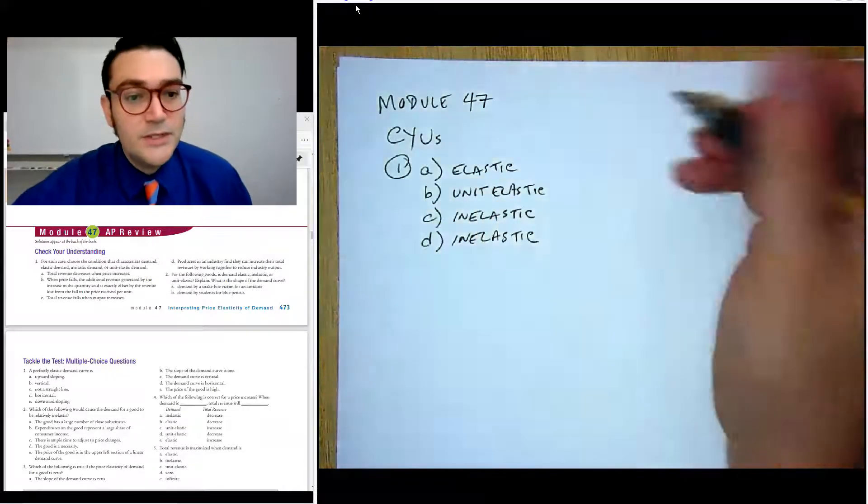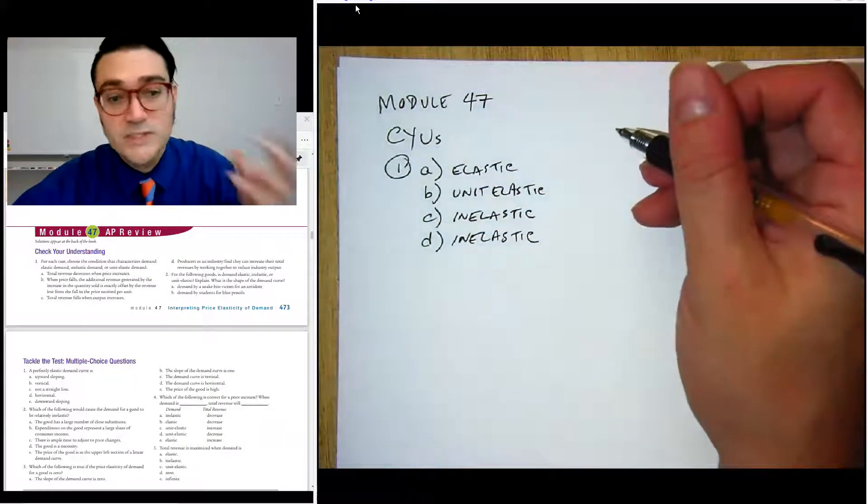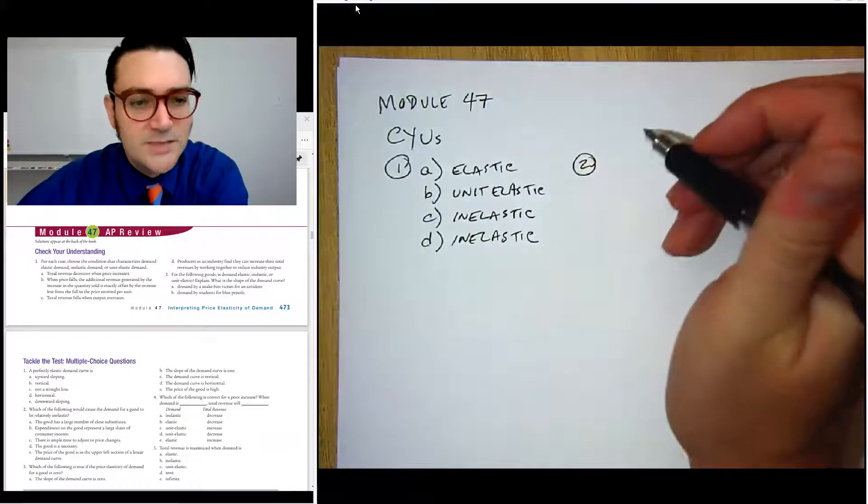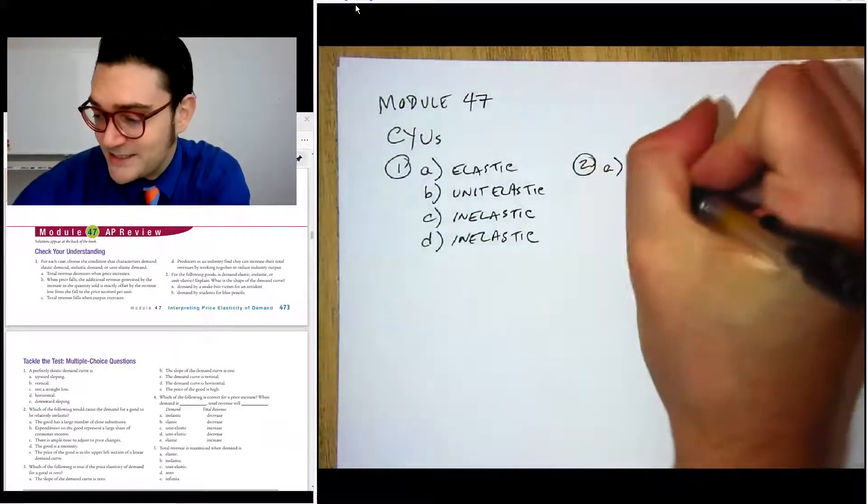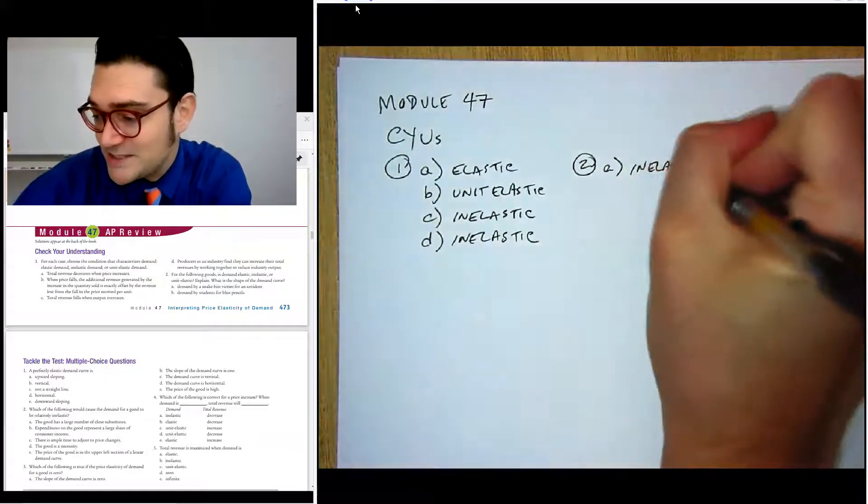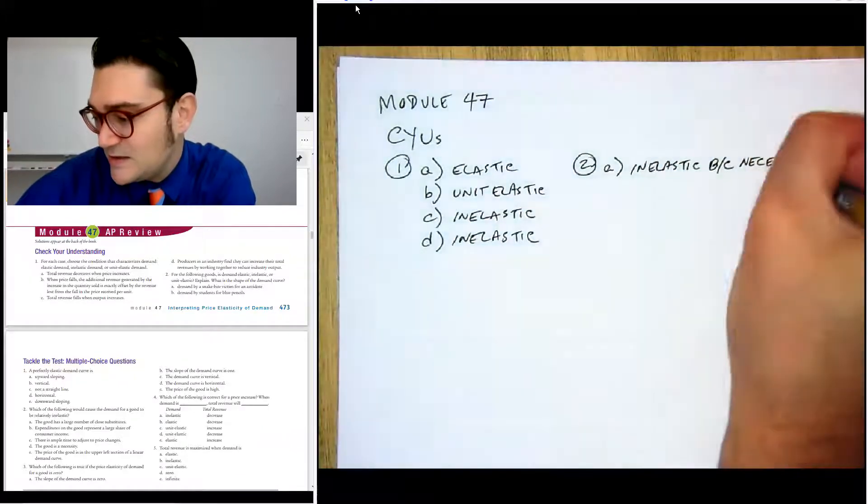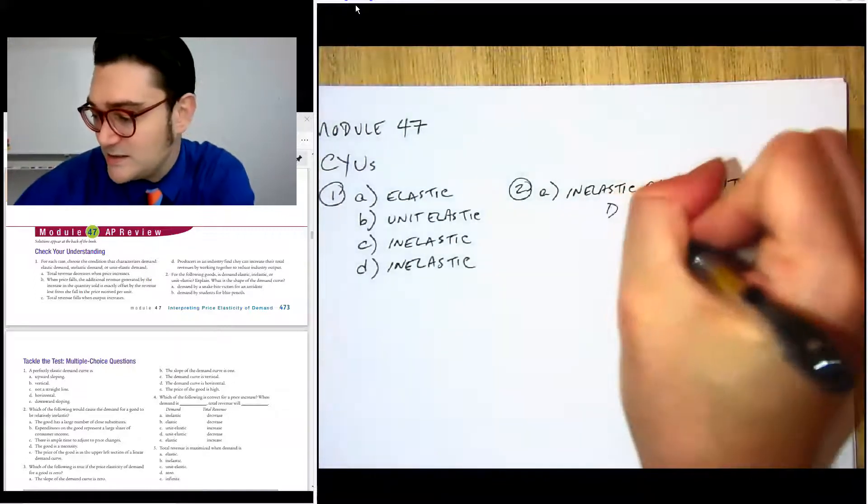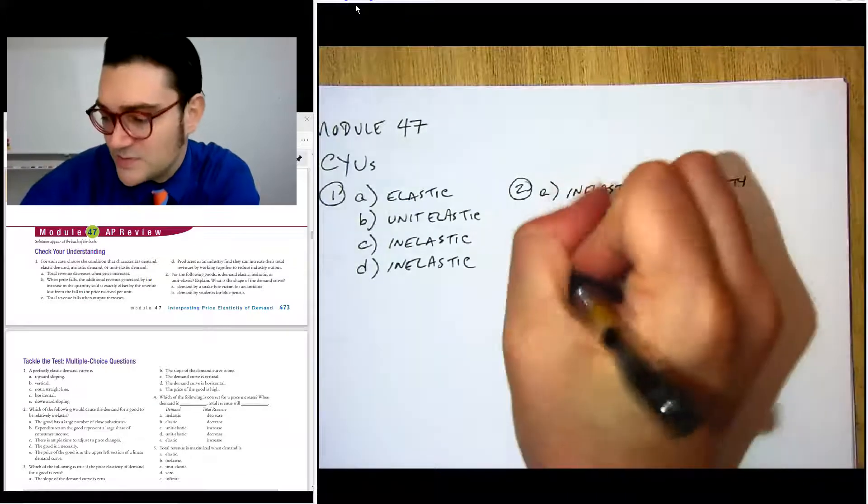Number two says for the following goods, is it elastic, inelastic, or unit elastic, and explain, and what's the shape of the demand curve, like vertical or horizontal. For A, it says demand by a snake bite victim for an antidote, we would say that that's pretty inelastic because it's a necessity. And then we can just say demand is vertical or close to vertical. It's very steep.